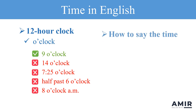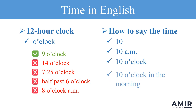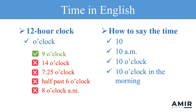To summarize, we can tell the time in a few different ways: by just saying the number — 10; by using a.m. or p.m. — 10 a.m.; by using o'clock — 10 o'clock; or, for more clarity, you can say '10 o'clock in the morning.' I hope you enjoyed this lesson. Thanks for watching, and see you next time.